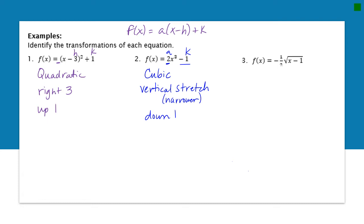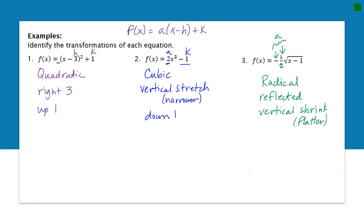The last one here is from the radical family — the only family that uses a radical. I have a negative, so this graph is going to be reflected. I also have one-half. Both of those are considered my a value but do two different things: the negative reflects, and the one-half is a vertical shrink, making the graph flatter. Then I have a minus one inside the radical — that's like a number in parentheses, so it's my h value. H always moves left and right — H stands for horizontal. So this moves the graph to the right by one.